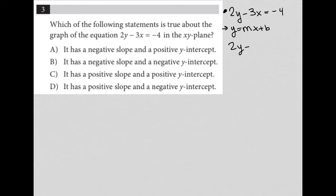So again, I have my 2y minus 3x equals negative 4. I'm converting it into y equals mx plus b, which means I want to isolate the y on the left-hand side. So I'm going to move this 3x to the right-hand side by adding 3x to both sides of the equation.